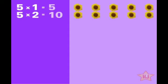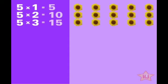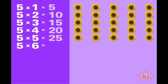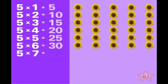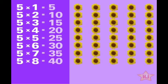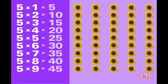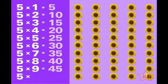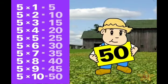5 times 1 is 5, 5 times 2 is 10, 5 times 3 is 15, 5 times 4 is 20, 5 times 5 is 25, 5 times 6 is 30, 5 times 7 is 35, 5 times 8 is 40, 5 times 9 equals 45, and 5 times 10 equals 50.